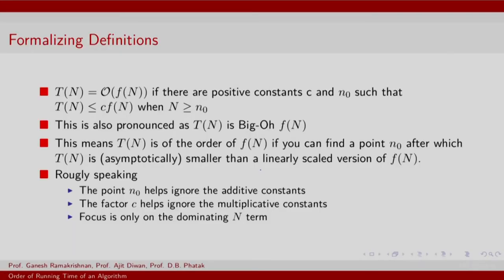Recall our formalization of the first notion of rate of growth. We bounded the rate of growth of a function using big O, which states that the upper bound for T(n) is c times f(n) for all values of n greater than or equal to n_naught. Asymptotically, T(n) is bounded by some other function f(n). The constant c allows us to ignore multiplicative constants associated with f(n), while n_naught helps ignore additive constants that may be part of T(n).